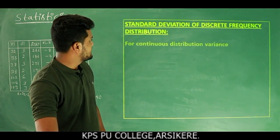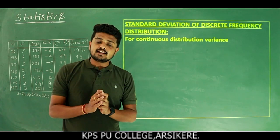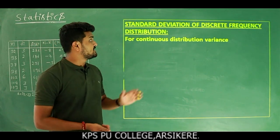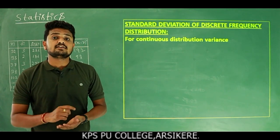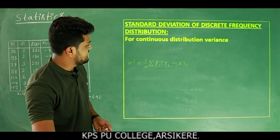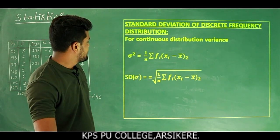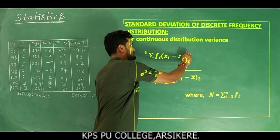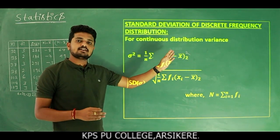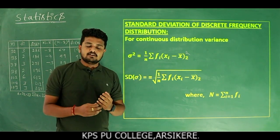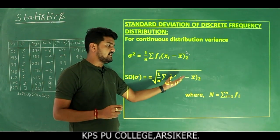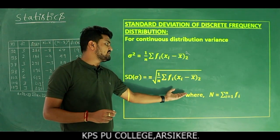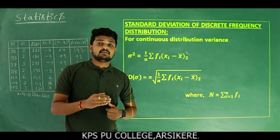Now moving to standard deviation of continuous frequency distribution. For continuous frequency distribution, again we use the same formula: variance sigma square = (1/n) × summation fi × (xi − x̄) whole square. Then standard deviation is the square root of that variance. The mean x̄ = summation(fi × xi) divided by n, where n is the sum of the frequencies.